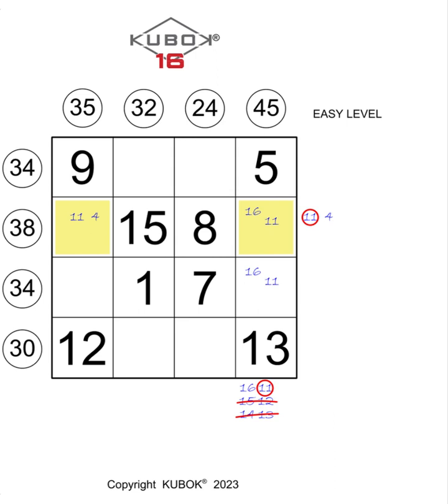Only the number 11 can go to the intersection between the fourth column and the second line. In fact, 11 is included both in the two numbers sought in the fourth column and in the two numbers in the second line.